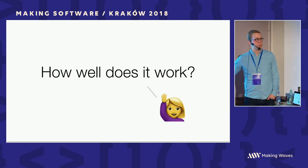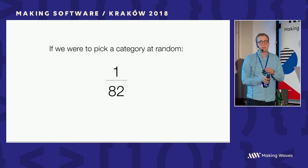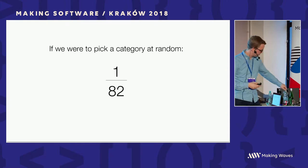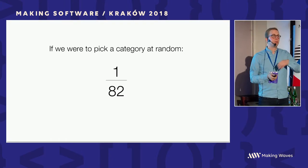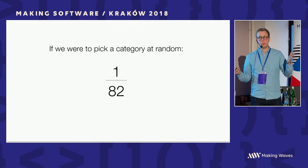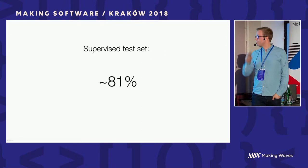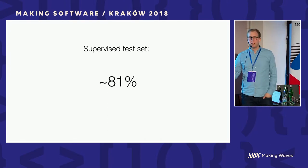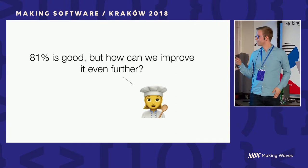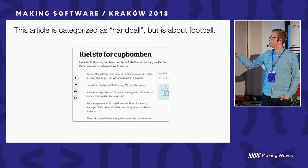So how well does this actually work? When you do machine learning you often want to compare to a baseline. The simplest baseline when doing classification is a random pick. With binary classification between two labels it would be 50-50. But in this case there are 82 categories, so if you picked one at random it's 1/82, around 1.2%. Our supervised test set has an accuracy of around 81%, which is good. But we think we should do even better — 81% means 4 out of 5 articles is predicted correctly.